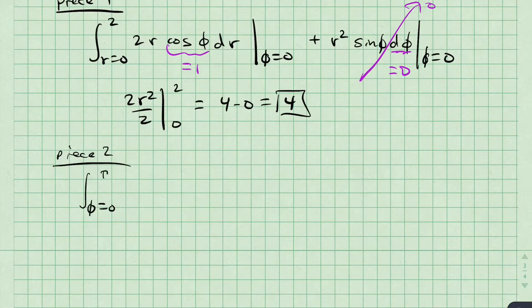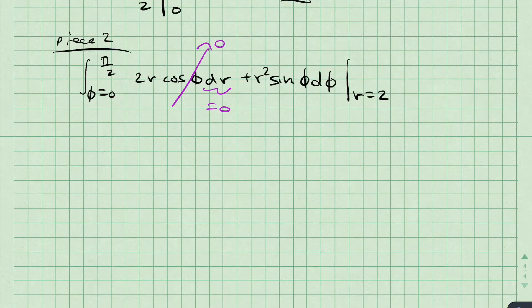For section 2, r is constant at 2, and phi changes from 0 to pi over 2. Again, since r does not change, dr is 0, and I can integrate quickly to get an answer of 4.